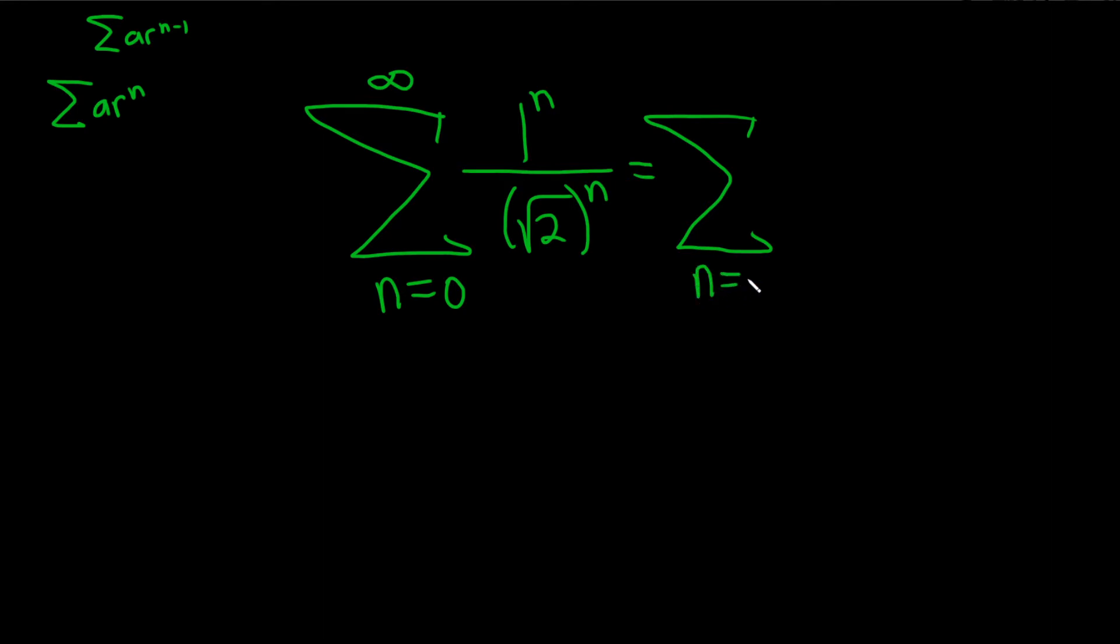This is the sum from 0 to infinity of 1 over the square root of 2, and then this whole piece here is to the nth power.